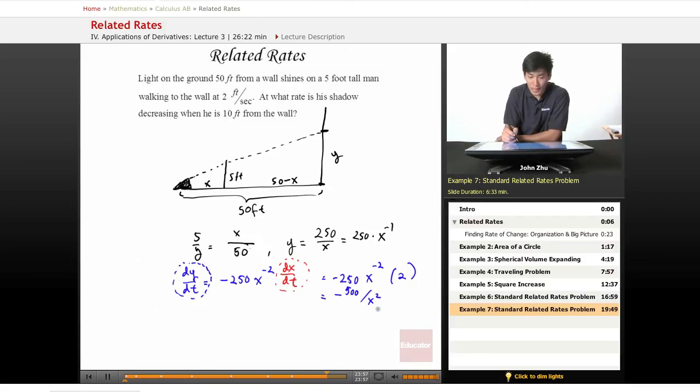All we need is to find x. So what is x? When the shadow is decreasing, when he is 10 feet from the wall, at what rate is his shadow decreasing? At 10 feet, here's your hint, this is your x.